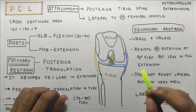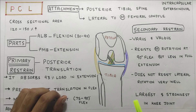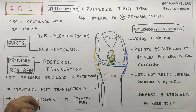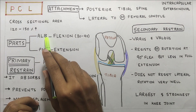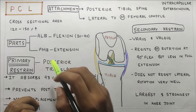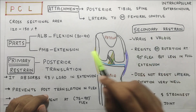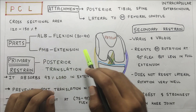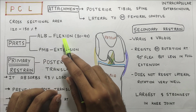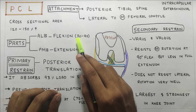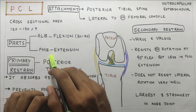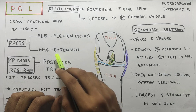PCL has a very large cross-sectional area and in fact it is the largest and strongest ligament in the knee joint. Coming to the parts of the PCL ligament, it has an anterolateral band and a posterior medial band. If you remember ACL, ACL had an anteromedial band and a posterior lateral band. The anterolateral band becomes taut during flexion, that is at 80 to 90 degrees of flexion, whereas the posterior medial band becomes taut at extension.